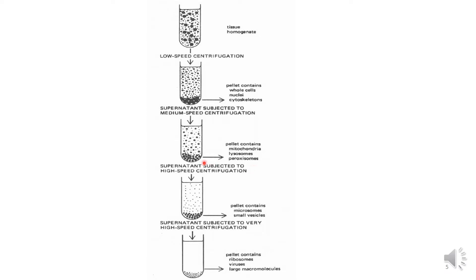The supernatant from medium speed centrifugation is removed, placed in another tube, and subjected to high speed centrifugation, where the pellet contains microsomes and small vesicles. Once again the supernatant is removed and subjected to very high speed centrifugation, yielding a pellet containing ribosomes, viruses, and large molecules such as DNA and proteins.